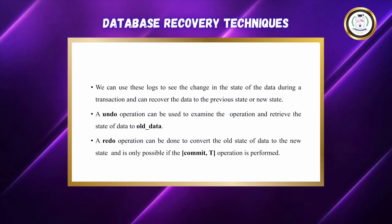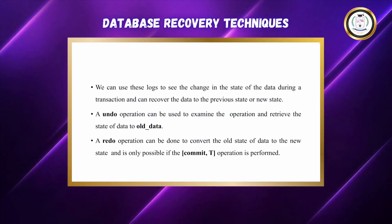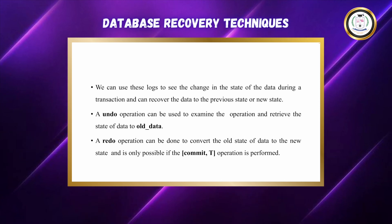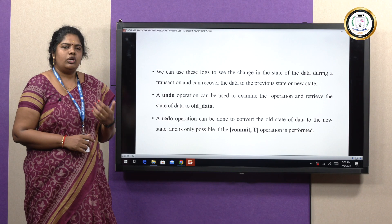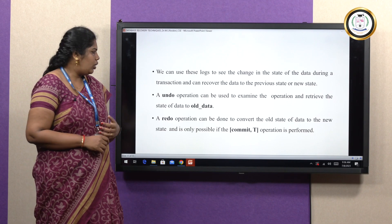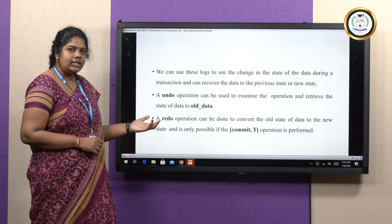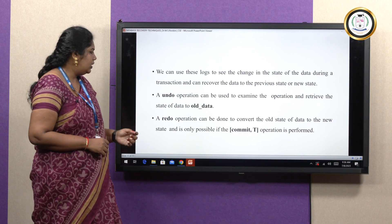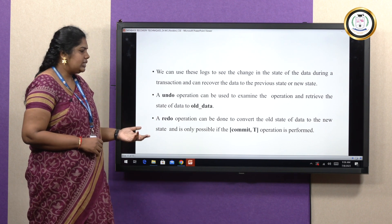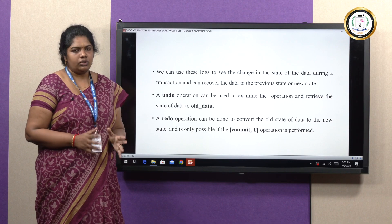If it is an undo operation, it is used to examine the operation and retrieve the old data. If you are going with the redo operation, it is used to convert the old state of the operation to the new state, and it is possible only if the commit operation is complete.